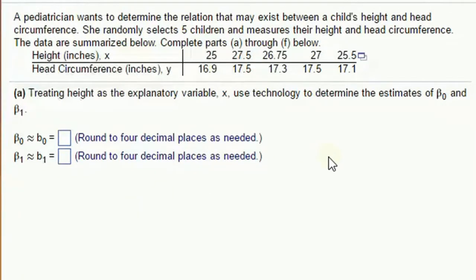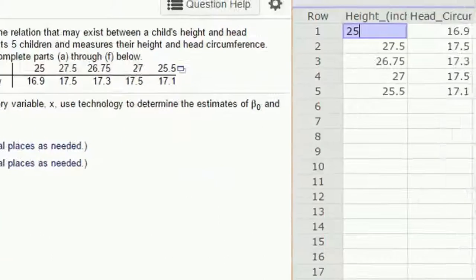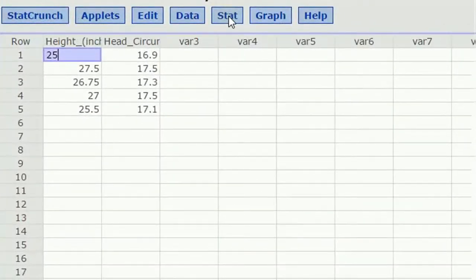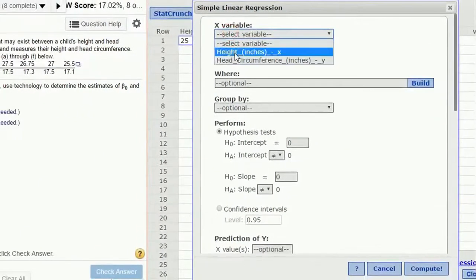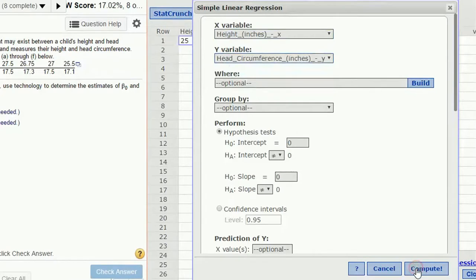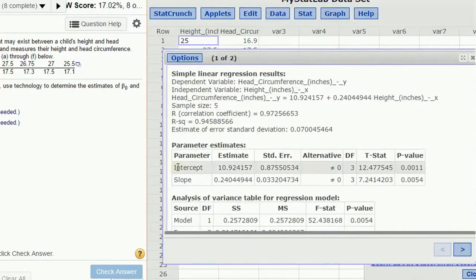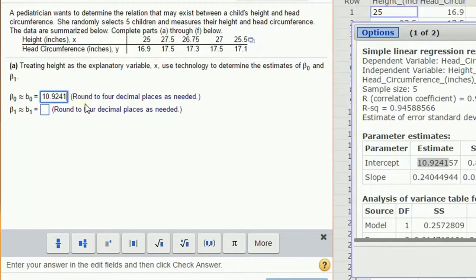Okay. So once again, we got some data. A pediatrician wants to determine the relation that may exist between a child's height and head circumference. She randomly selects five children, measures their height and head circumference. So we've got height and head. Let's open this in StatCrunch. And we'll do another linear regression. We're going to pull up the regression menu for simple linear. We're going to be using height x to predict y. And again, we're going to just compute standard output. We're going to have for each of the parameters for our beta 0, the intercept, our estimate is 10.92. I'm going to copy four decimal places, but I'm going to have to round it up. So 10.9242. And then for the slope, taking four decimal places, this I do not round up.